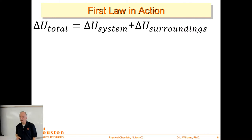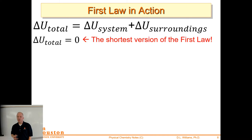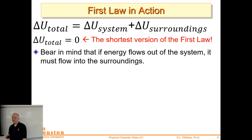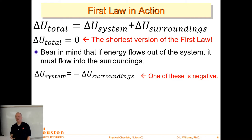The change in internal energy total really only has two options — the system or the surroundings. The first law says the change in total internal energy is zero. So delta U_system equals negative delta U_surroundings — one of those numbers is negative. If the system loses energy it's negative, then delta U of the surroundings is positive. The negative sign makes up the difference.